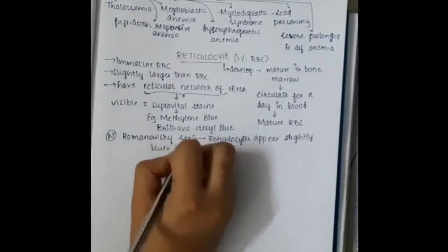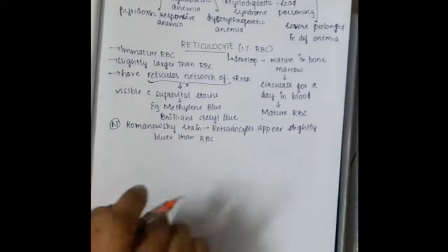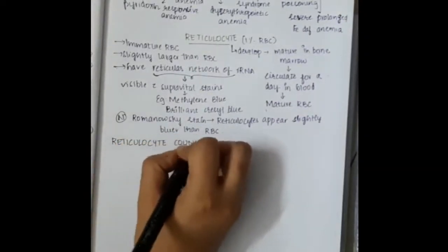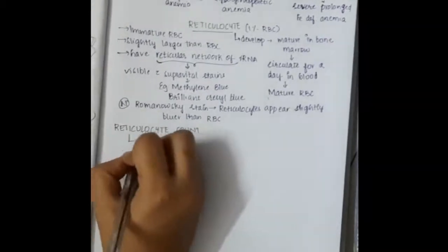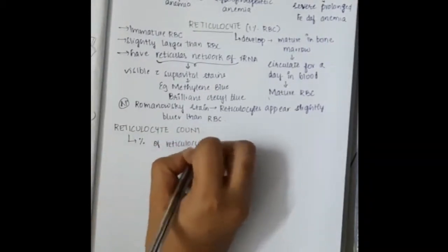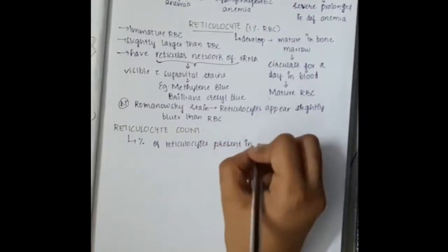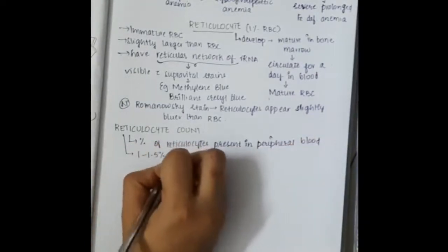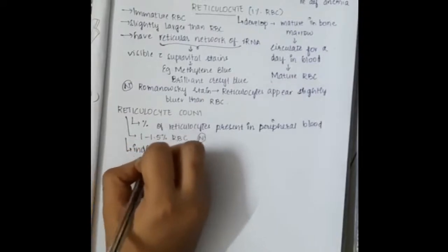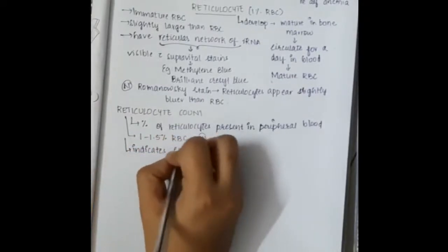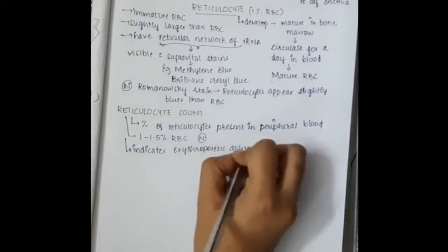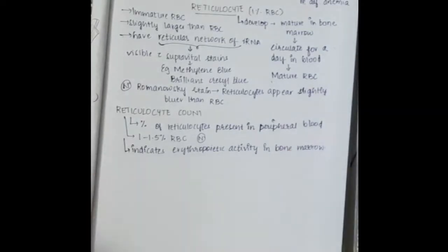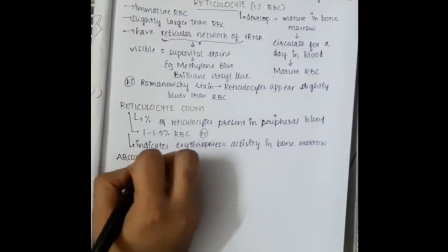In normal Romanowski stain, reticulocytes appear slightly bluer than RBC. Then we have reticulocyte count. Reticulocyte count is the percentage of reticulocytes present in peripheral blood. There are around 1 to 1.5% of reticulocytes in blood normally. It indicates erythropoietic activity in the bone marrow.